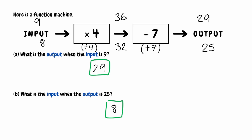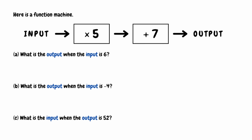Let's take a look at one final example. For this function machine, we start with our input, we then multiply by 5, and we then add 7. For part A, we're figuring out the output when we're given an input of 6. Starting with 6, we multiply by 5, which gives us 30. We then take that 30 and add 7, so 30 plus 7 gives us 37. When the input is 6, the output is 37.